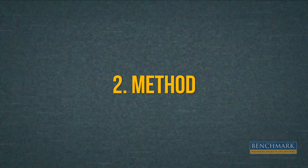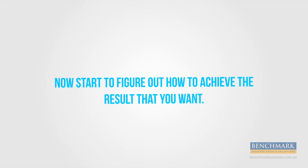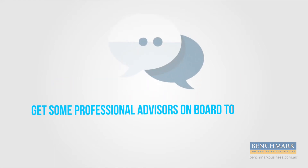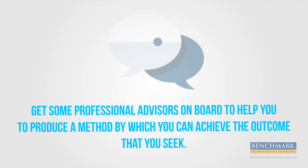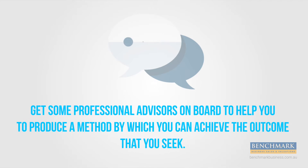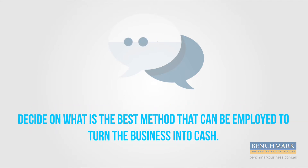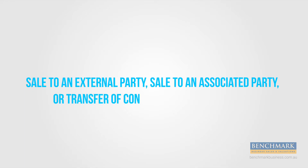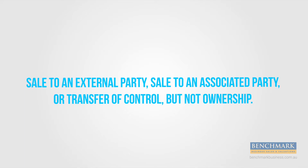2. Method. Now start to figure out how to achieve the results you want. Get some professional advisors on board to help you to produce a method by which you can achieve the outcome that you seek. Decide on what is the best method that can be employed to turn the business into cash. Sale to an external party, or sale to an associated party, or transfer of control but not ownership.